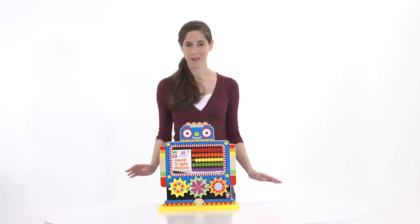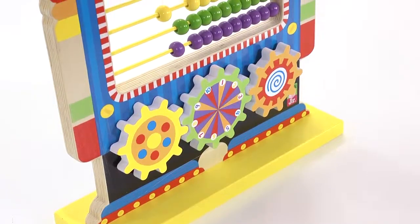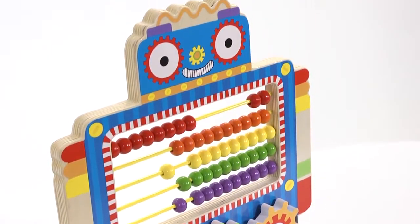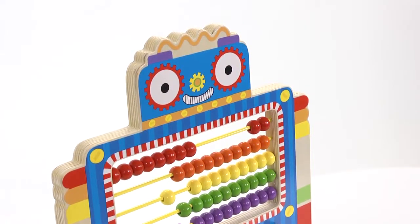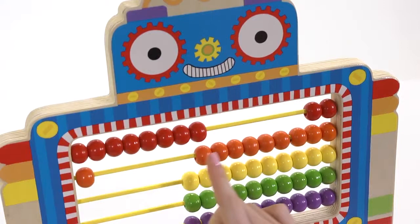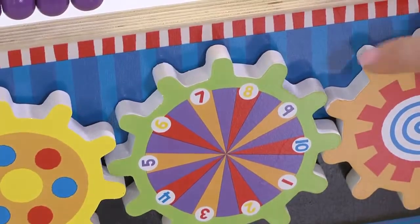Here's a toy that has been around for centuries, the Abacus. Now your child can play on the original calculator with this updated, colorful, and fun Count and Spin Abacus by Alex Toys. Constructed from sturdy wood, this robot abacus has 50 counting beads and three front-mounted dials.